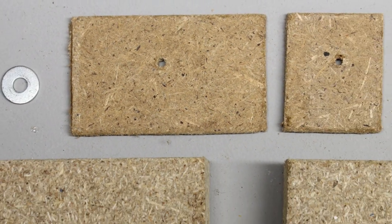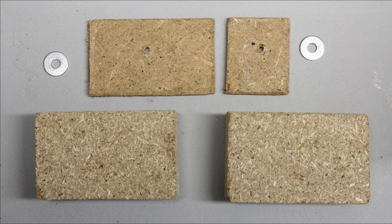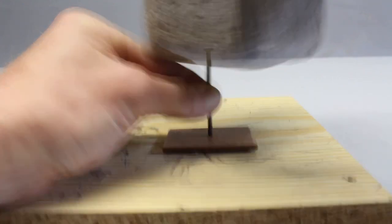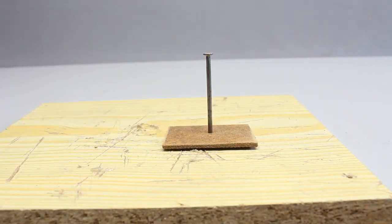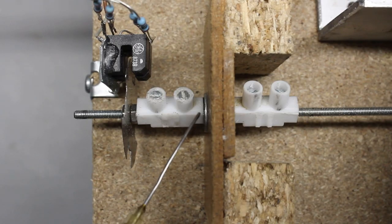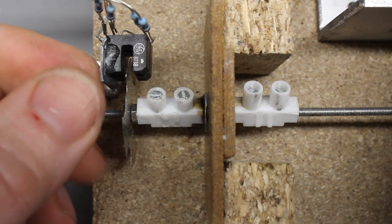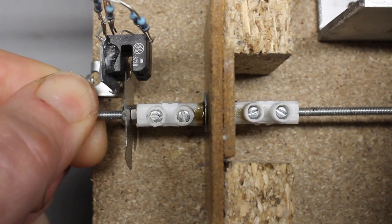At the other end, the threads are guided by pieces of fiberboard. Once more, the needed hole can be drilled without a machine. Two screw terminals keep the threaded rod in place. Some drops of oil keep the friction low.